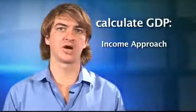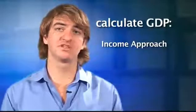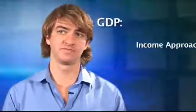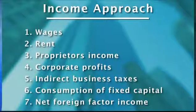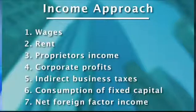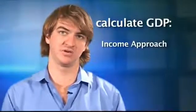Now we're going on to the income approach towards calculating GDP. This is very rarely tested in the Economics One course, but it's good that you should know it. The income approach calculates all the types of income that make up GDP — wages, rents, proprietors' income, and corporate profits — and then adds indirect business taxes, consumption of fixed capital (which is depreciation), as well as net foreign factor income. Adding up all those terms gives you the same value of gross domestic product.